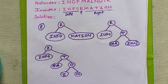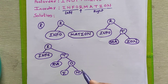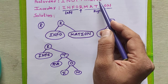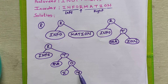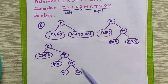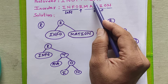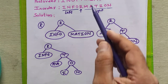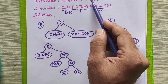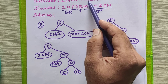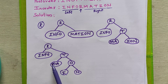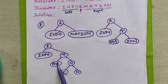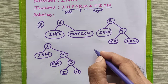Again we go to the post-order sequence and pick the next element, that is N. If you see in this diagram, N is already placed, so we will ignore it. We go to the next element, that is I — I is also already placed, so we discard it. The next element is A. In this diagram, A is here. If we make A as the root node for this subtree, then M will go to the left hand side because it is appearing on the left hand side of A.